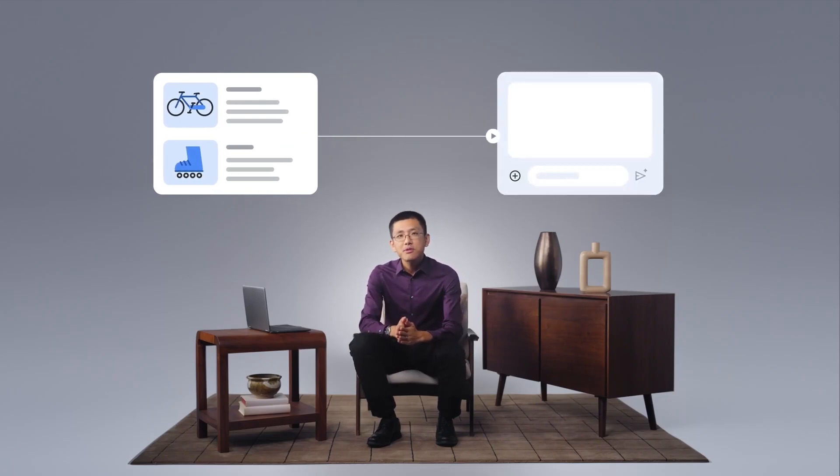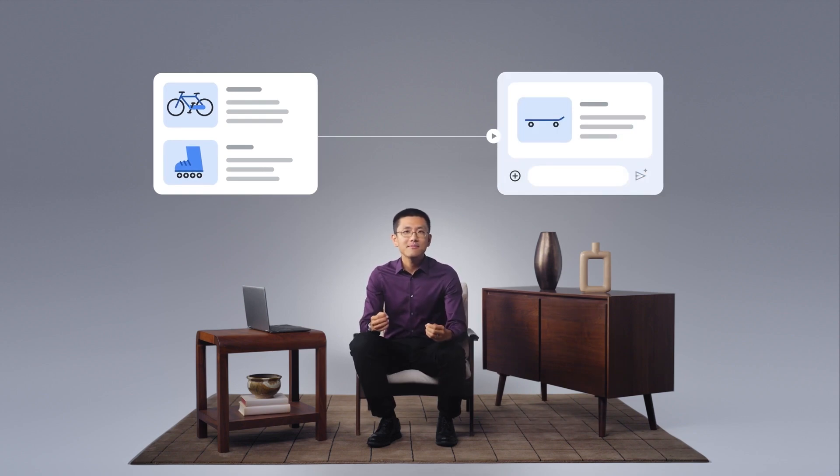For example, you might use few-shot prompting to generate content in a particular style. Let's say you work for an online retailer. You need to write a product description for a new skateboard. You already have descriptions for existing products such as a bicycle and rollerblades, and you want the skateboard description to follow a similar style and format.